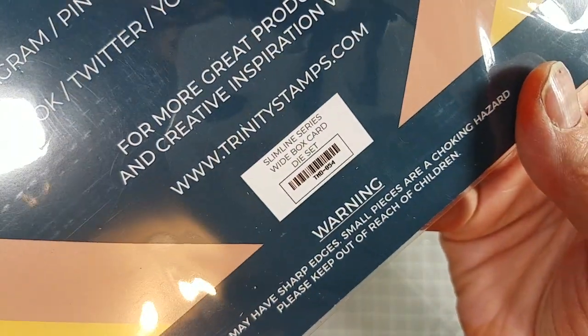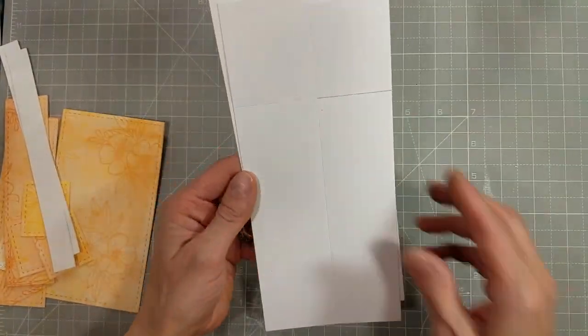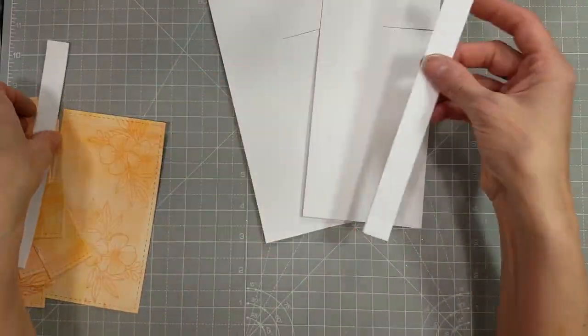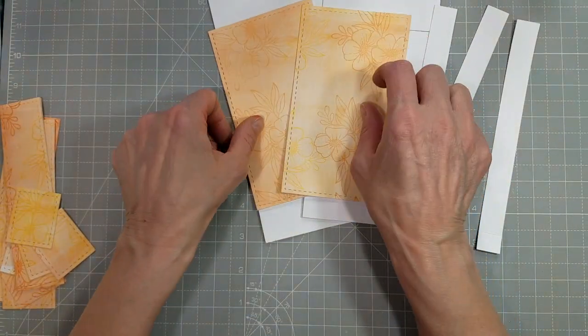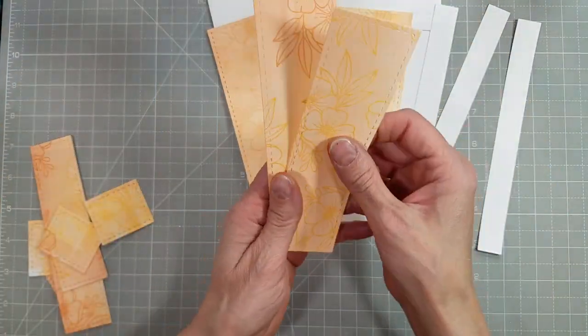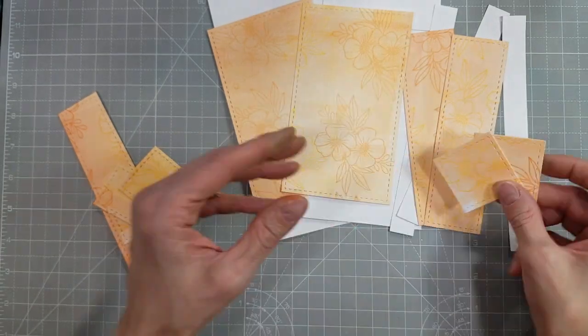Now we're going to pull out the wide box card die set. This will make a slimline box card. I'm taking all of the pieces that I would die cut and laying them out so you know what you need. However, there are a couple things I made extras of.